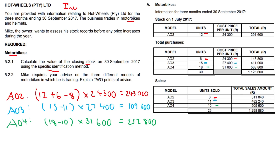Remember, we use the specific identification method particularly when dealing with luxury goods or very expensive items, like luxury cars, motorbikes, or high-end laptops like Alienware. With these items we can specifically identify each individual unit. With FIFO it's more applicable to perishable goods - first in first out - things that have an expiry date.